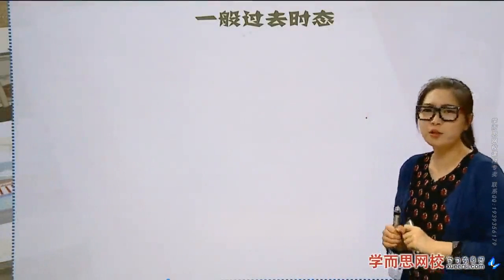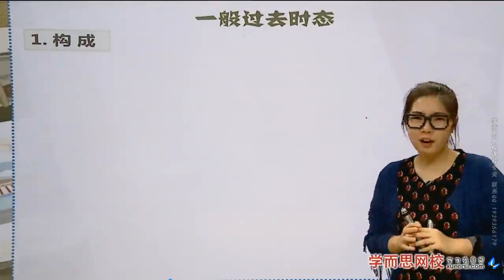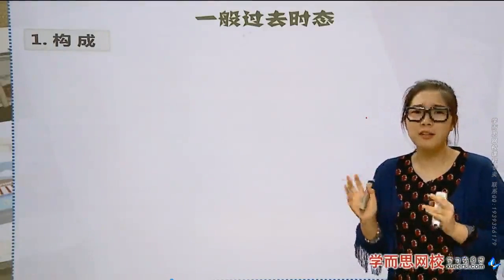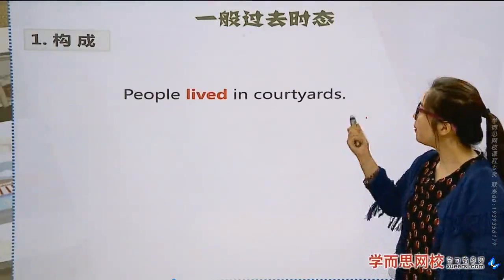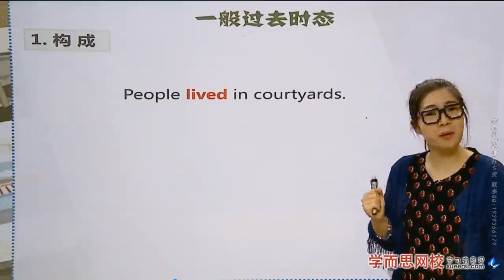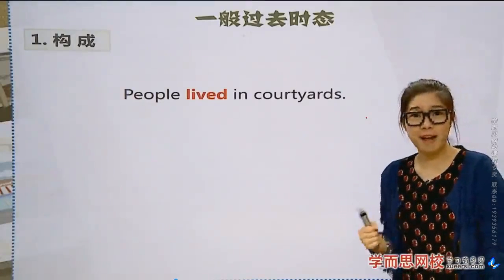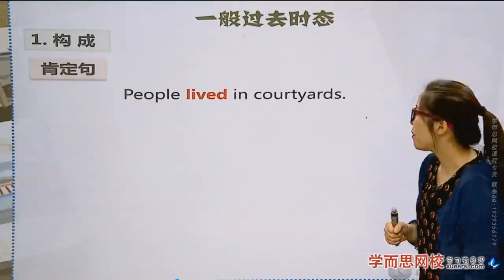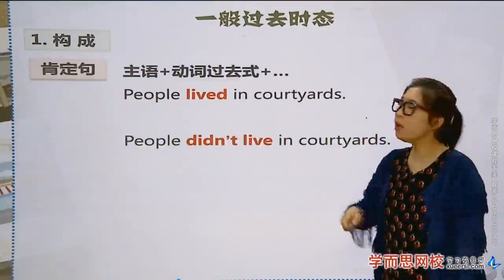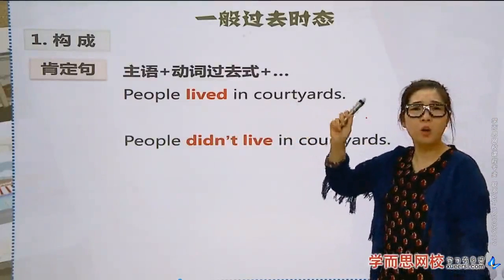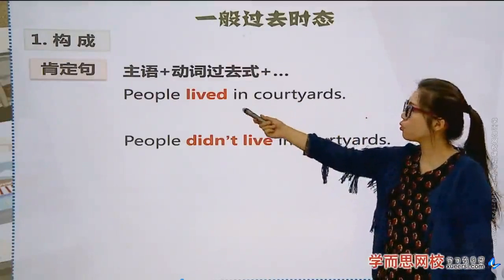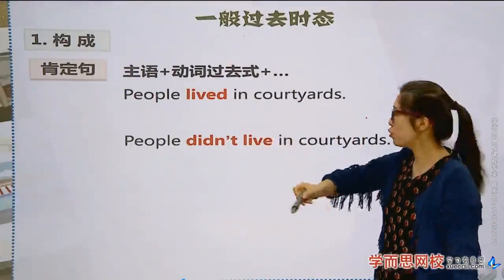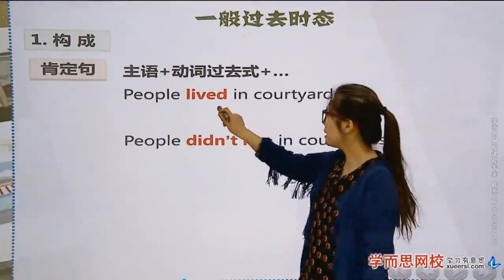People in the past were really, really different from today. Now let's look at the second structure of the simple past tense — actions that happened in the past. 'People live in the courtyard' — the action verb is 'live.' The structure is: Subject + past form of verb + other elements. 'Live' becomes 'lived' — just adding the letter 'd.'